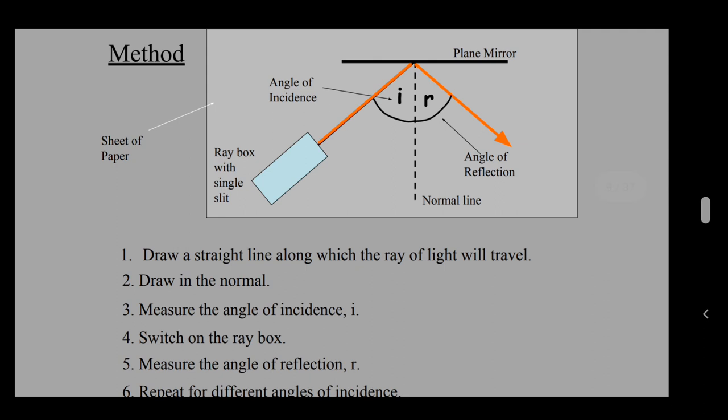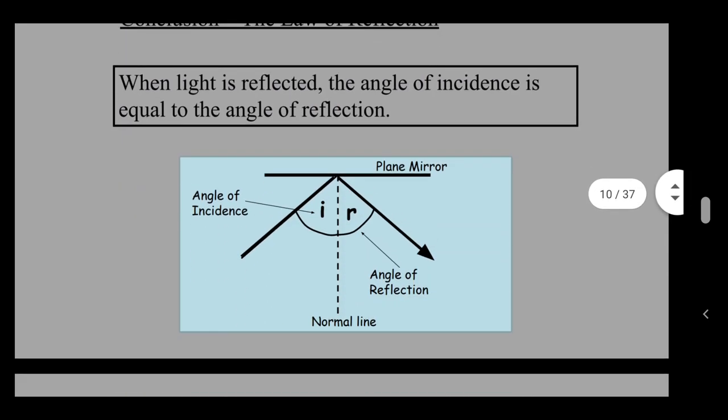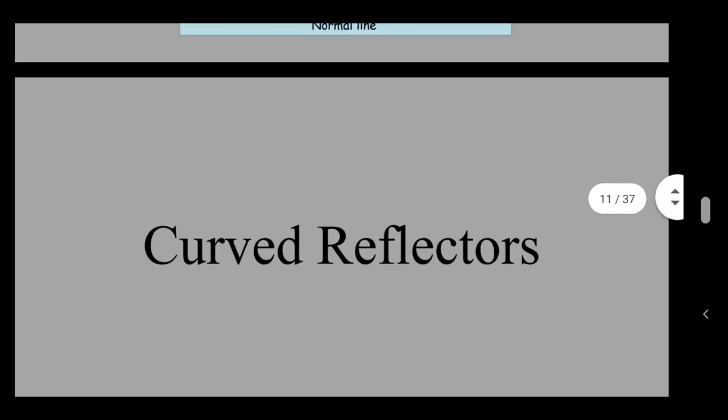We did an experiment looking at the law of reflection. We had something bouncing against a plane mirror. And the law of reflection says that the angle of incidence, and this is really important, is the angle between the ray of light and the normal line. Always between the ray of light and the normal line. And then the angle of reflection is between the normal line and the ray of light. It's never between the mirror or the surface and the ray of light. The law of reflection was very simple. It was that the angle of incidence is equal to the angle of reflection.